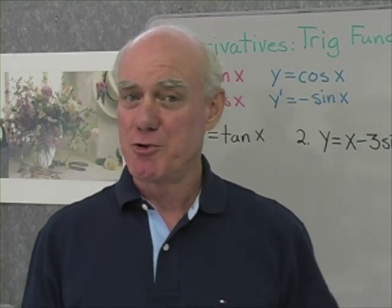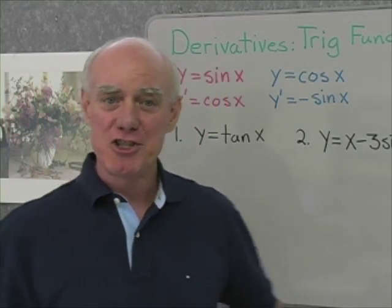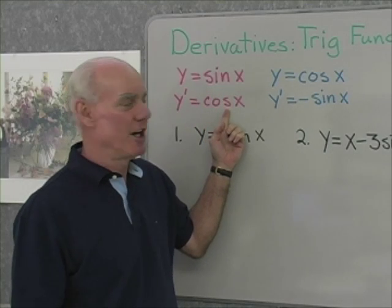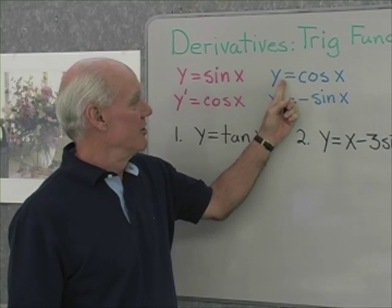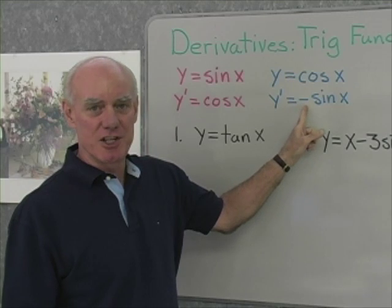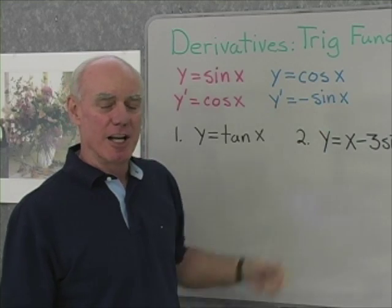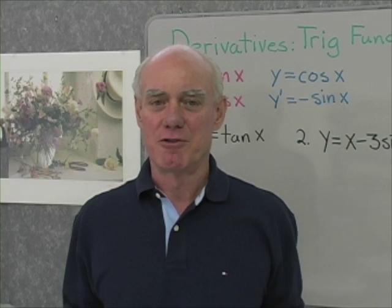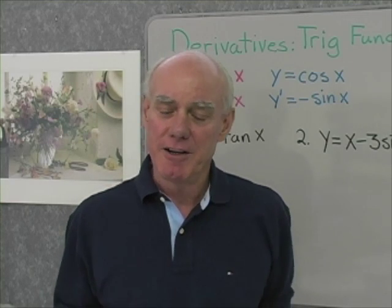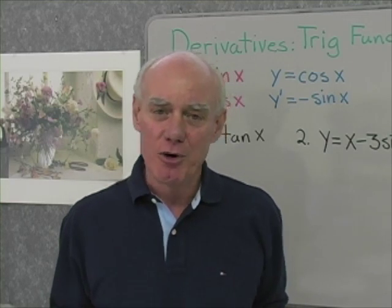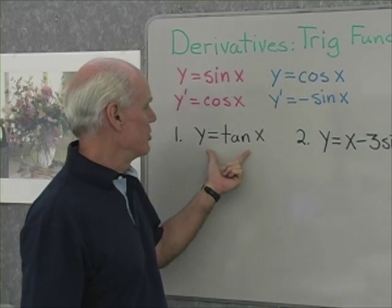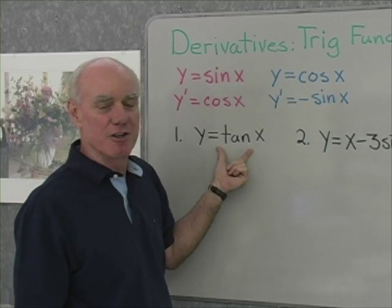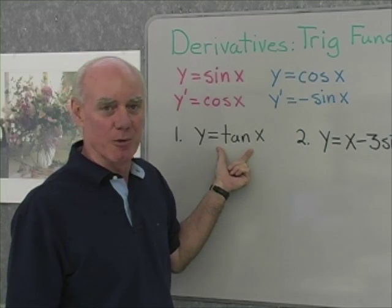Let's differentiate some trigonometric functions. The derivative of sine x is cosine x. The derivative of cosine x is negative sine x. All four other trigonometric functions also have derivatives which you should memorize, but if by chance you don't have them memorized, you can always use these derivatives to get the derivatives of the other ones.